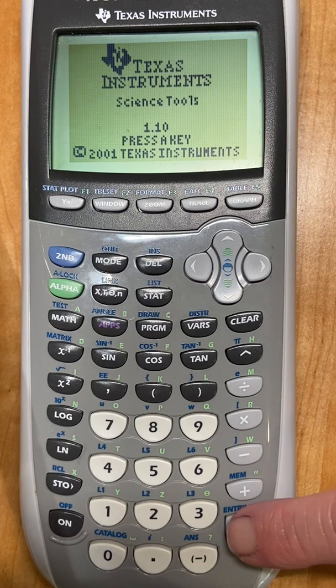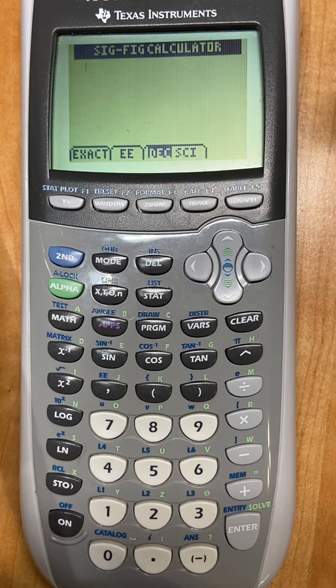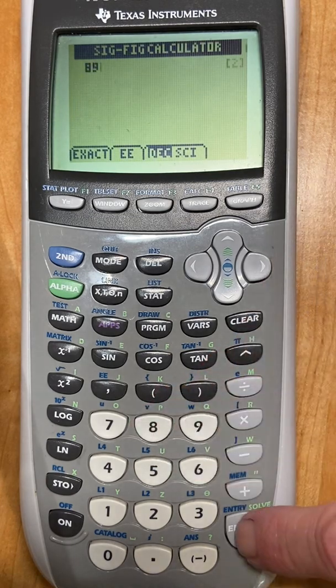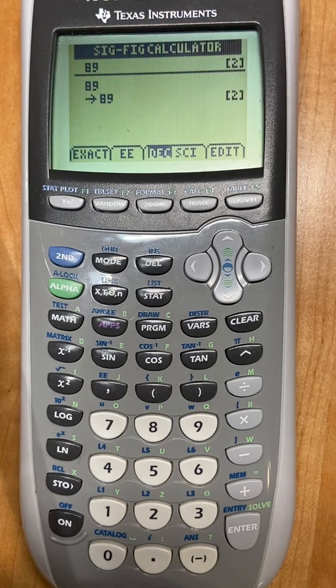Okay, you should be using this for your metric conversions. And then the first one is SIG-FIG Calculator, I'm just going to hit enter. Alright, so the first thing, I can just write a number, 89, enter. The first thing it's going to do is count the SIG-FIGs. I'm not doing anything so it just repeats itself.